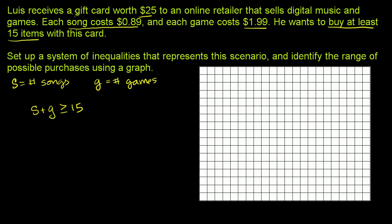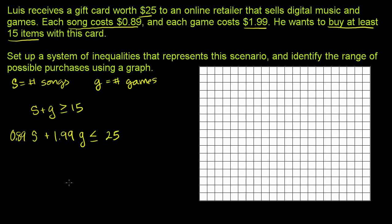The other constraint is the gift card is worth $25, so the amount he spends on songs plus the amount he spends on games has to be less than or equal to 25. The amount spent on songs is 0.89 times S, plus the cost per game, which is $1.99, times the number of games G. So 0.89S + 1.99G ≤ 25.